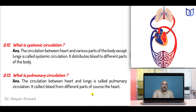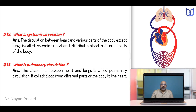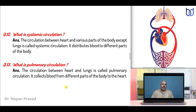What is systemic circulation? Two different types of circulation are found in our body: pulmonary circulation and systemic circulation. Systemic circulation is the circulation between the heart and various parts of the body except the lungs — it distributes blood to different parts of the body. Pulmonary circulation is the circulation between the heart and lungs, and it collects blood from different parts of the body to the heart.